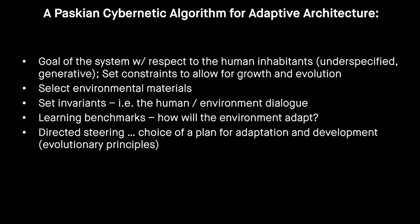Just to review the core tenets of a Paskian cybernetic algorithm for an adaptive architecture — this is predating any sort of deep generative computational work within computers, but the foundation for a way of thinking about complexity and emergent generative systems that are performance-based and the early definitions for an adaptive architecture. In a Paskian cybernetic algorithm: one, the goal of the system with respect to the human inhabitants must be underspecified and generative, which also allows us to set constraints for growth and evolution; two, we must select environmental materials and set invariants, such as how humans engage with their environment through feedback loops; three, set learning benchmarks — how will the environment adapt — as well as directed steering and the choice of a plan for adaptation and development through evolutionary principles.